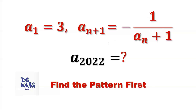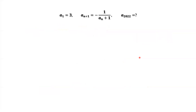This is the given recursive formula. Given an, we can find an+1. Sometimes, finding the general formula of an in terms of n is very difficult. How to solve this kind of problem? In general, we want to try a few numbers first — for example, n equals 2, n equals 3, n equals 4 — to see if we can find a pattern.